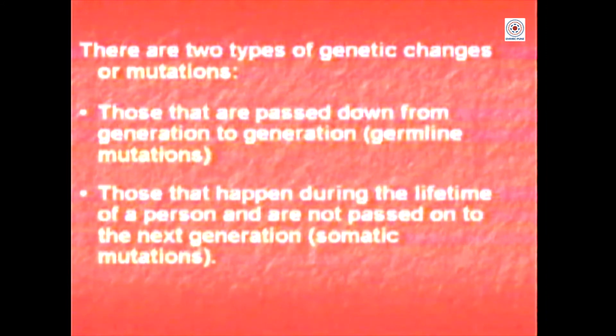So now we can talk of two types of genetic changes — one which are passed on from generation to generation, and others which are in somatic cells and not passed on to the next generation. If there is a germline mutation it will be passed on in the family; if it is a new mutation you have acquired, it is not going to be passed on. If you carry a predisposition, such a person is more likely to be susceptible to cancer.